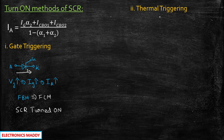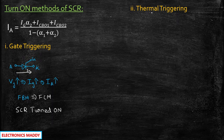The second method is thermal triggering. Thermal is something related to temperature. So with the help of a rise in temperature, we will be able to trigger the SCR. It sounds different, but it is possible.